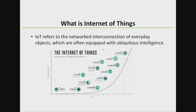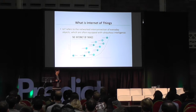What is Internet of Things? I searched online and this is the official definition about IoT. IoT refers to the networked interconnection of everyday objects which are often equipped with ubiquitous intelligence. For us as normal human beings, we look at IoT in two ways.